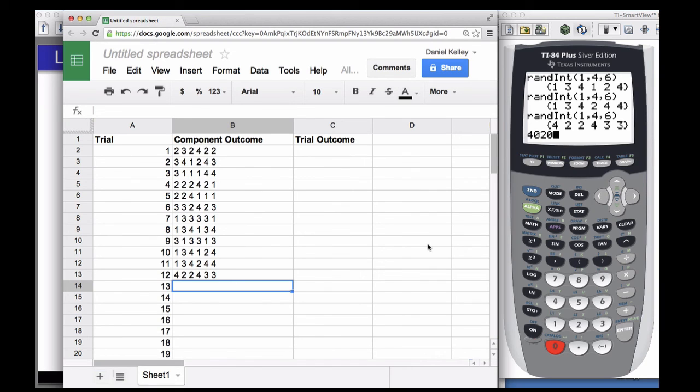Okay, I did 12 trials here and the trial outcomes for all of these are no. We did not ace the test, right? I didn't see one, one, one, one, one, one pop up anywhere here so that means that there was not a single case in 12 tries where we aced the test.